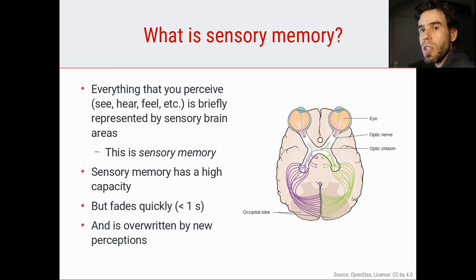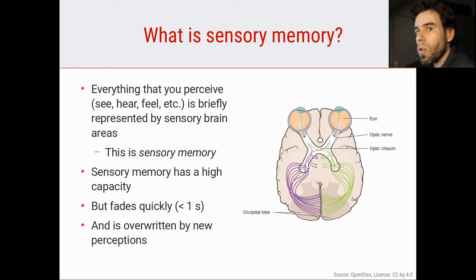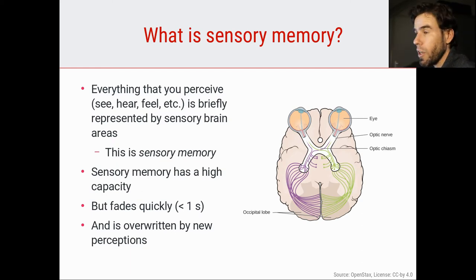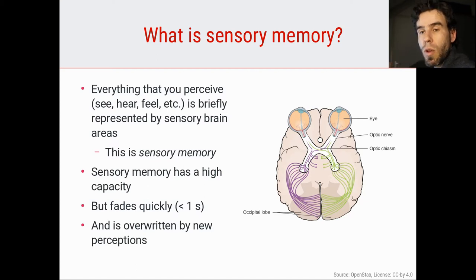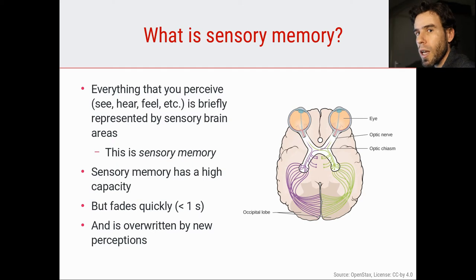So if I see a screen in front of me with, let's say, 20 digits — all those 20 digits form a very brief sensory memory. But then if I see another screen with another 20 digits, that earlier sensory memory will be erased in one go, and I have a new sensory memory of those new 20 digits. So it is a form of memory of sorts, but it is very fragile, very short-lasting, and is immediately erased by any new information that comes in.